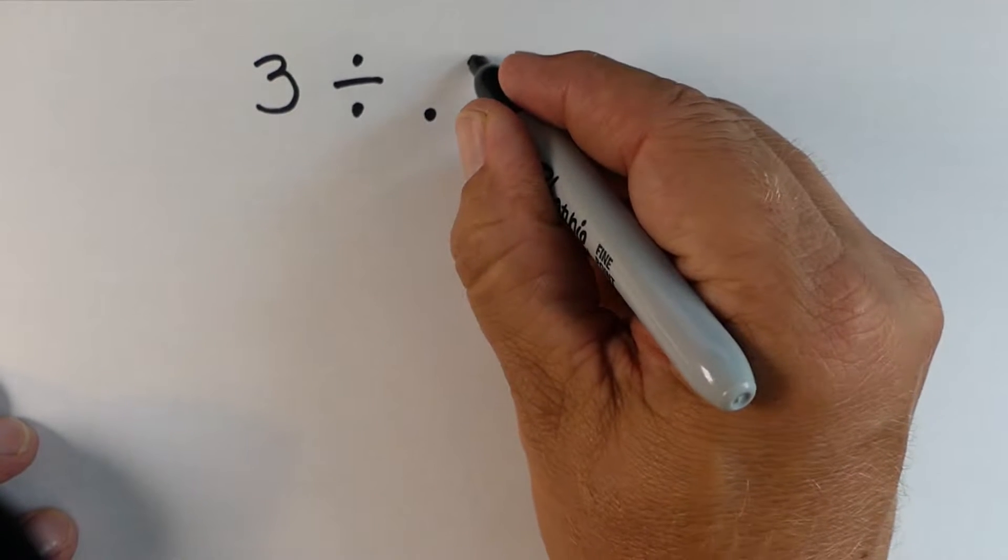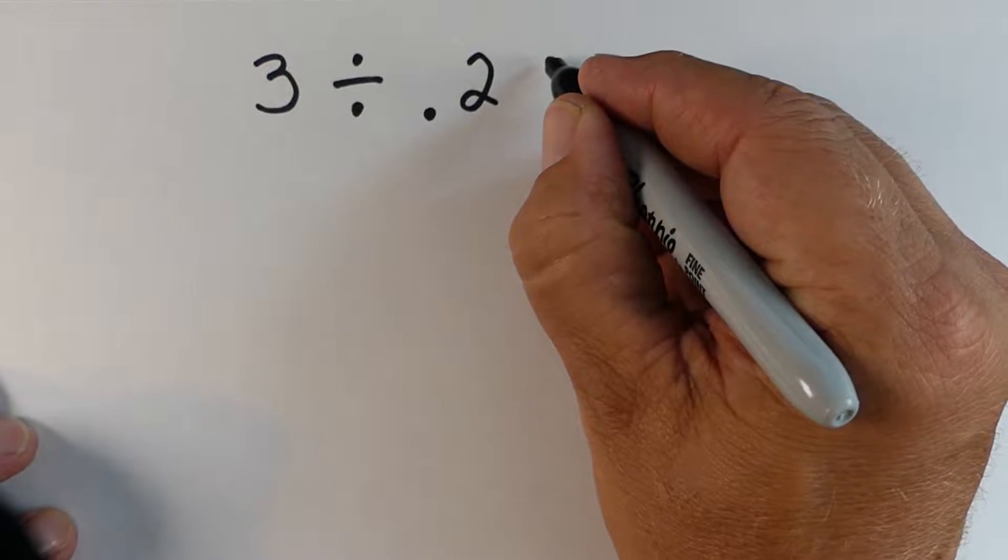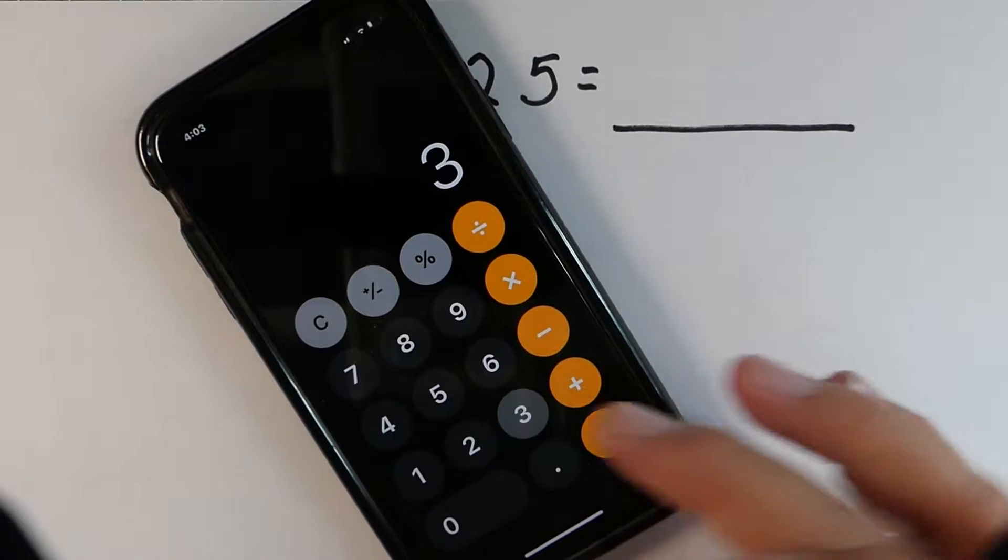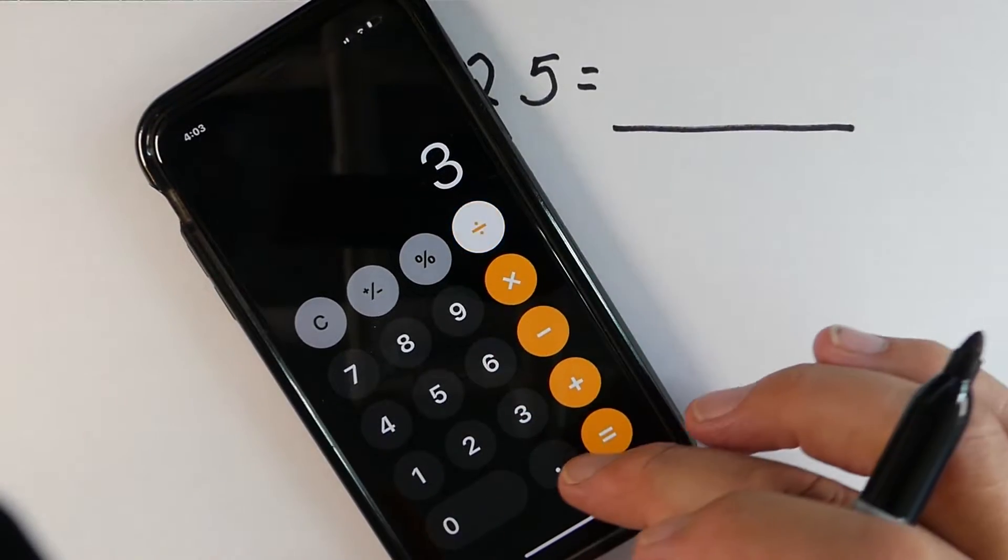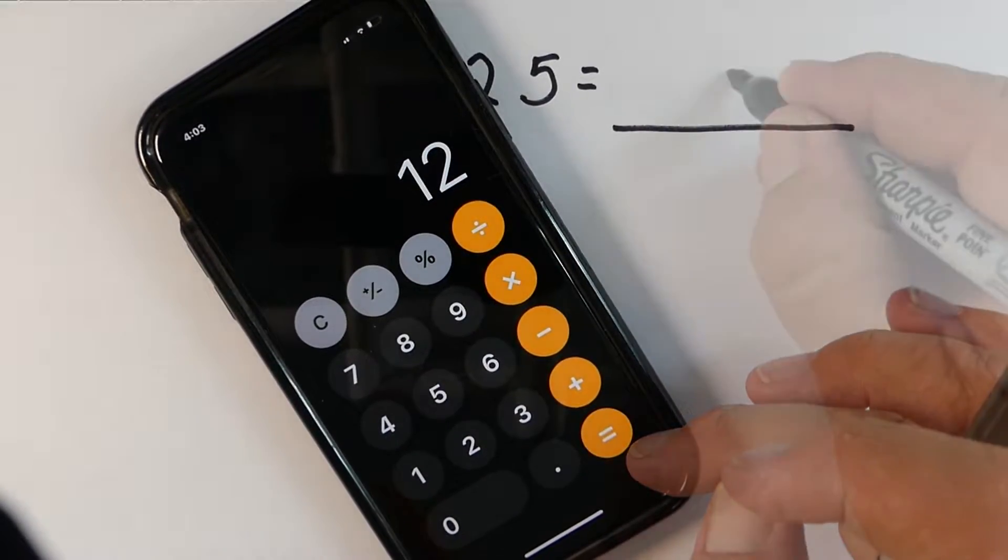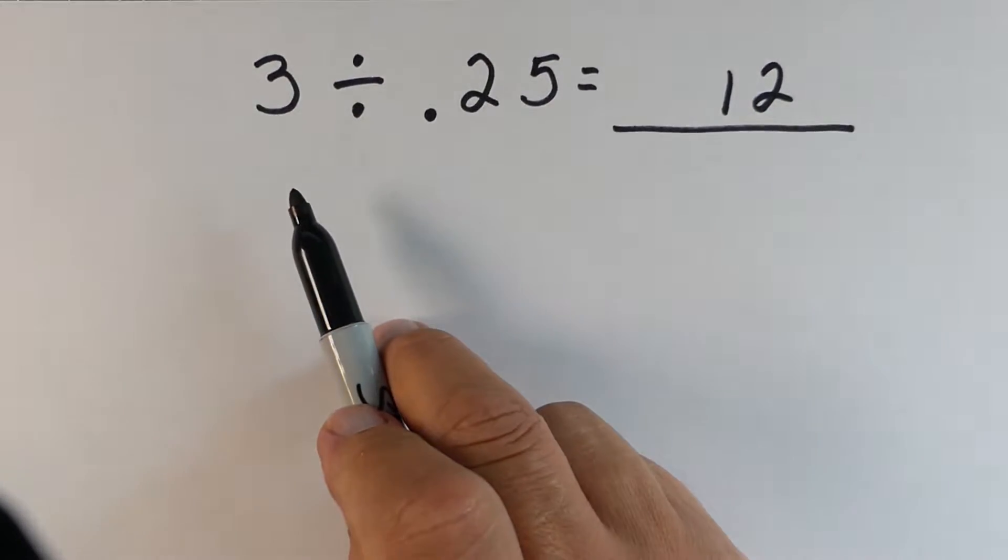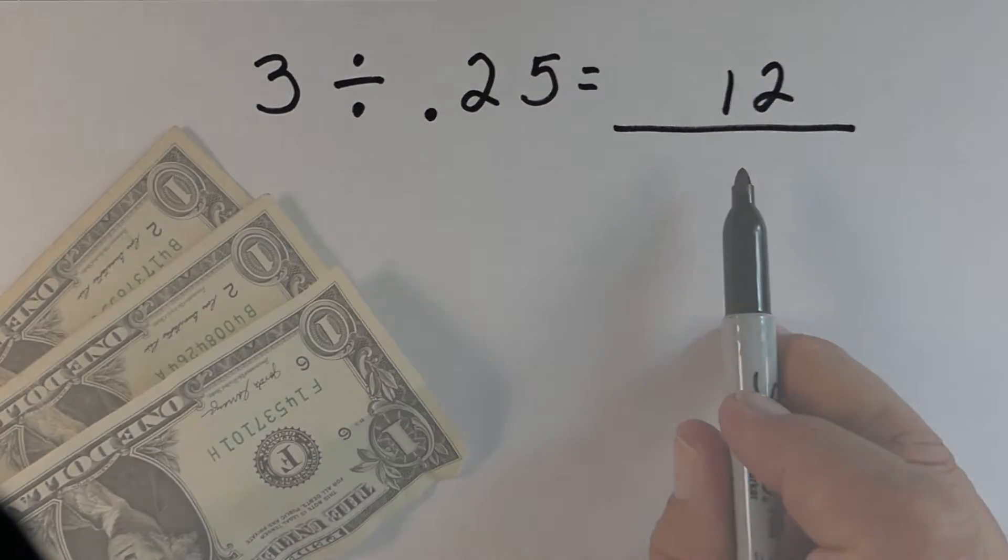First we'll model this. So let's say we start up with 3 and we divide it by 0.25 or 25 hundredths. So if we do it on the calculator just to check and see what we get, you can see that we end up with 12. So you might be thinking, how is it possible we can start with 3, divide it, and end up with 12?